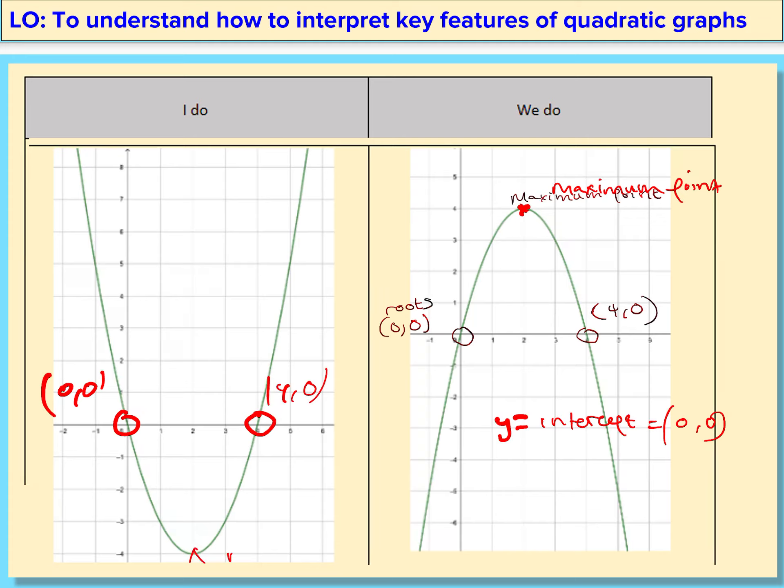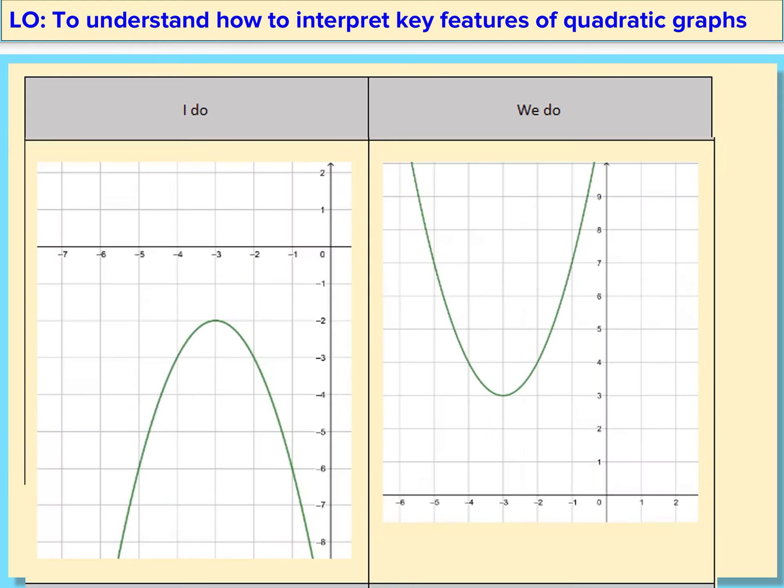Have a go at the I do question. Remember to pause your video. Great job. So with the answer for this, this is the root. So 0, 0 is a root of it and also 4, 0 is a root. And instead of having a maximum point, we actually have a minimum point. And also we do have a y-intercept here. The y-intercept is 0, 0. Great job.